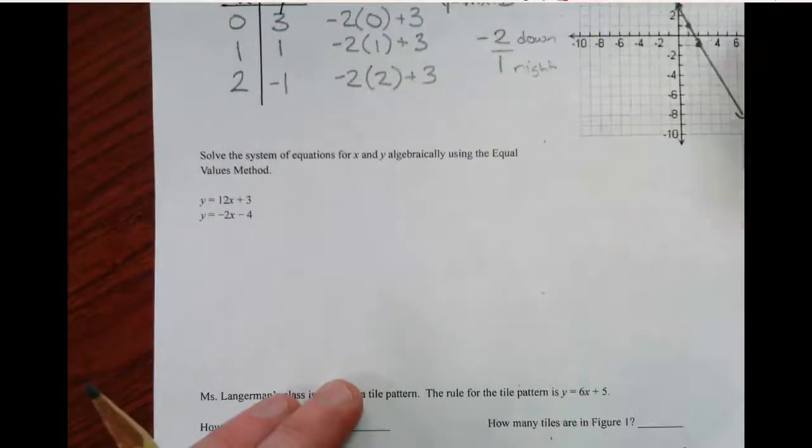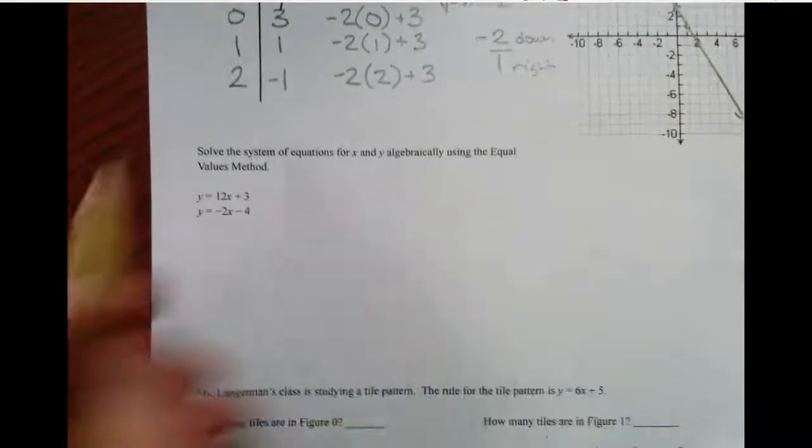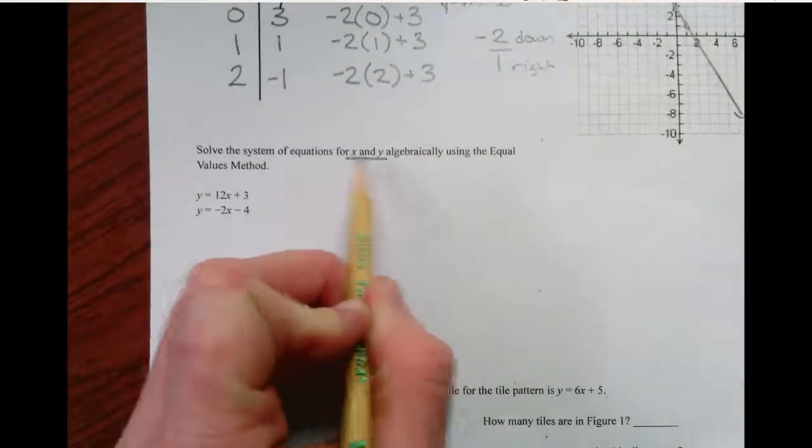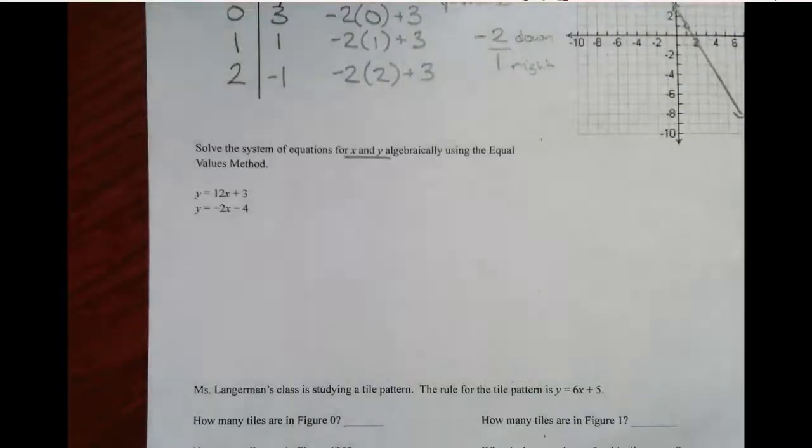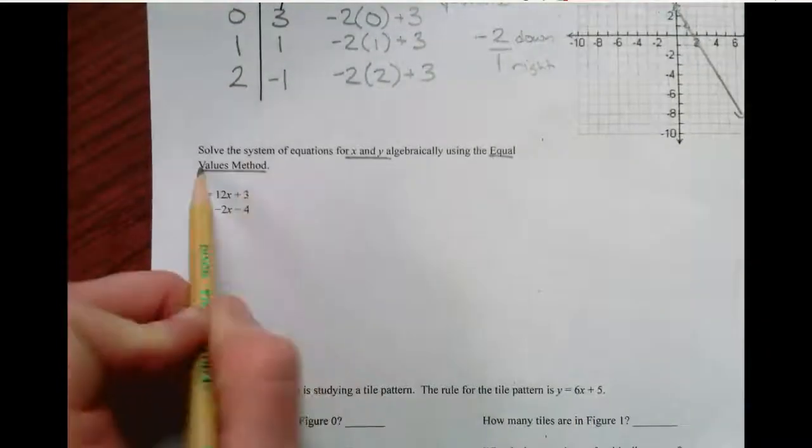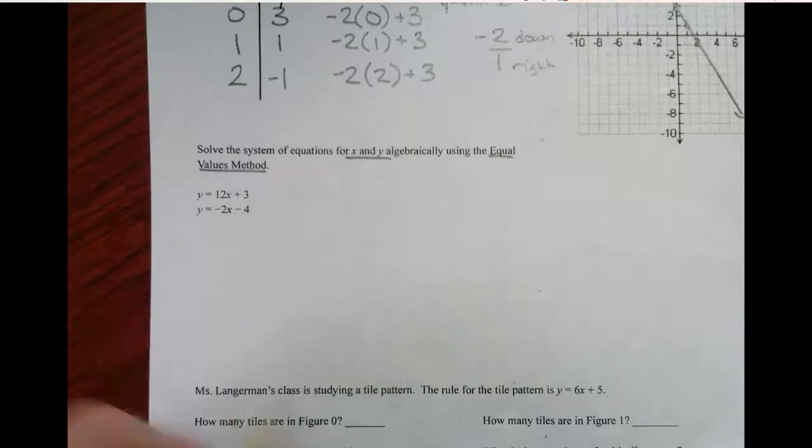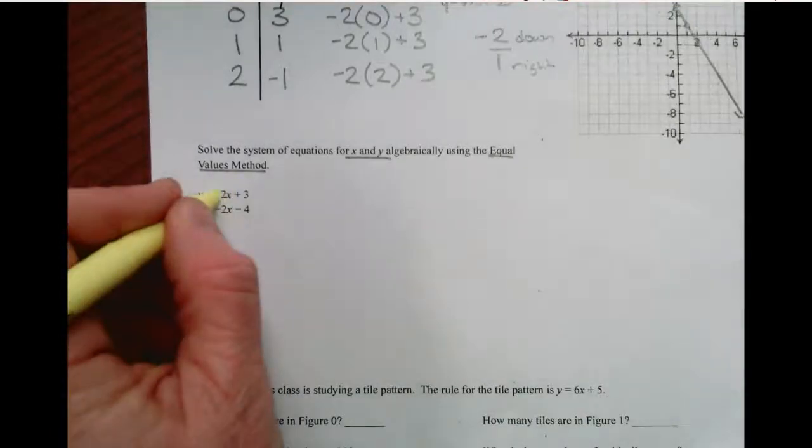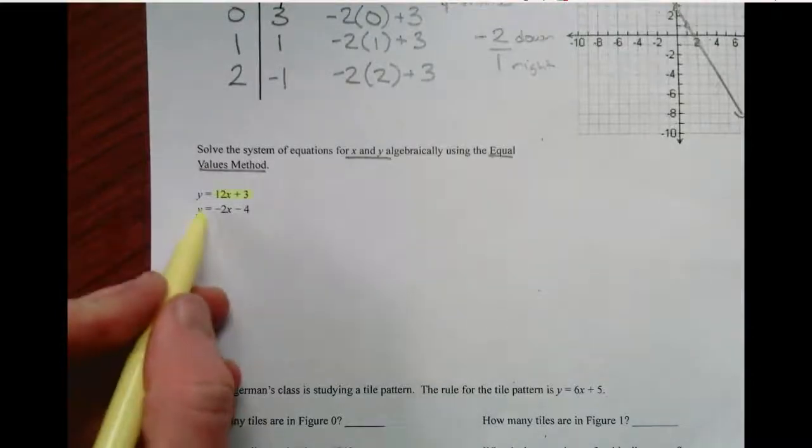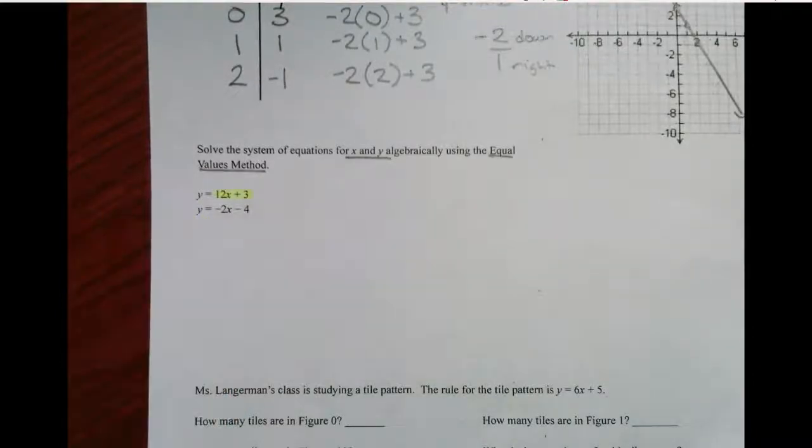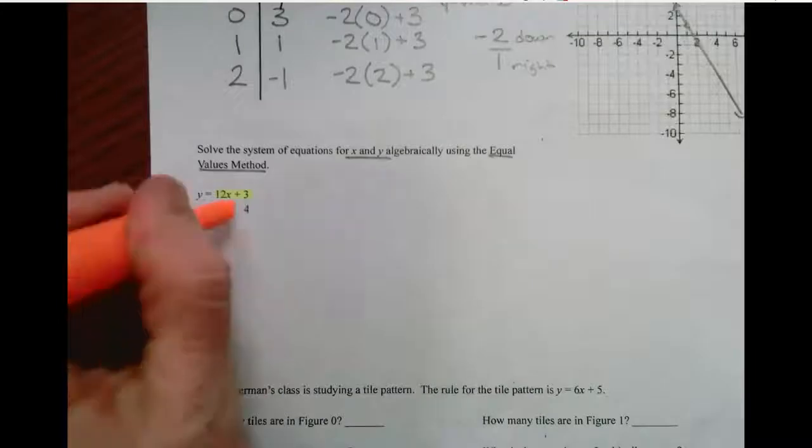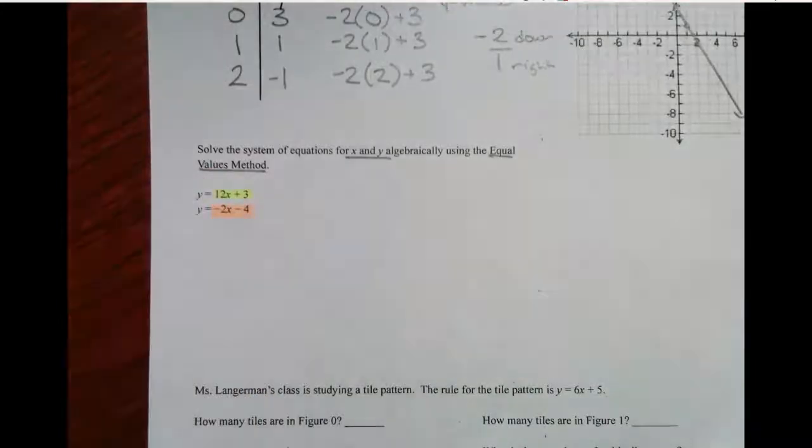Okay, this problem was straight out of your homework. Solve the system of equations for x and y. A lot of you forgot to solve for y algebraically using the equal values method. This is nicely set up for that. We know that y is equal to 12x plus 3, and y is also equal to negative 2x minus 4.